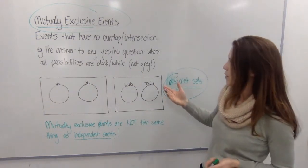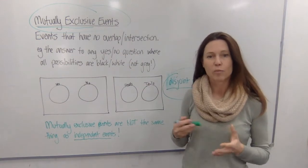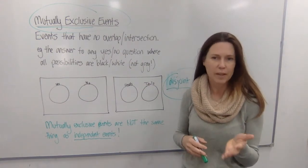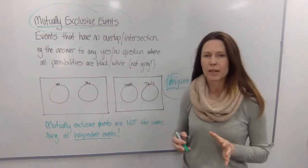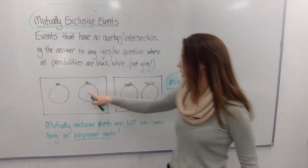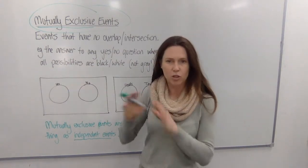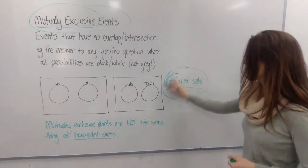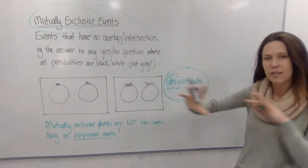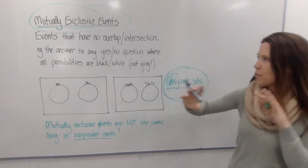So a good example would be anytime we ask a question that has a simple yes-no answer, not a maybe or sometimes or both, it's just yes or no. We can see that the events don't have any overlap and in fact we call these disjoint sets because they're sitting apart from each other and that's how I remember them.